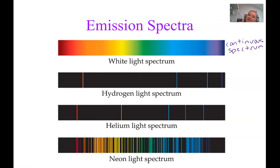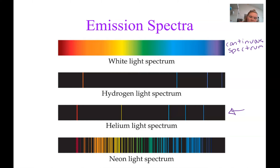These emission spectra are like a fingerprint. If we look at any helium atom, it's going to look like that. This is actually one of the ways scientists determine what elements exist on other planets or in samples — they look at the emission spectra and compare it to known samples.